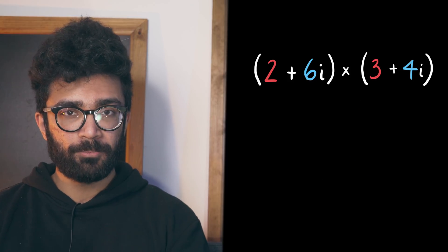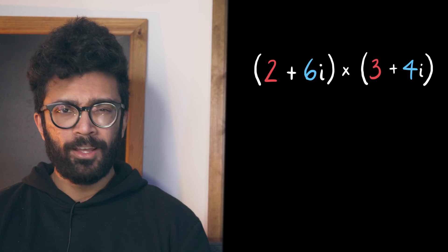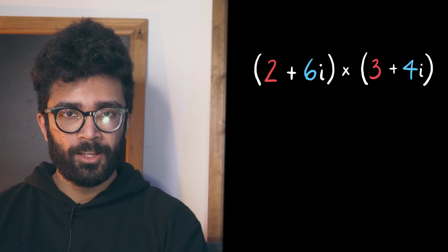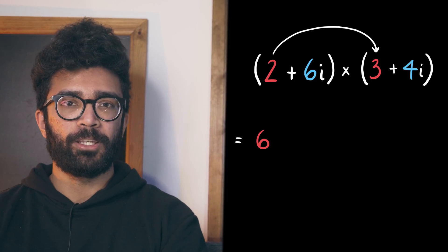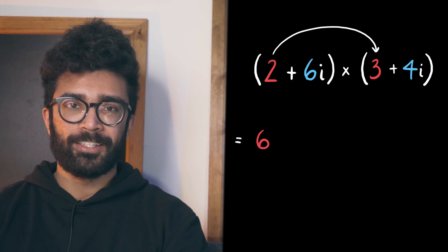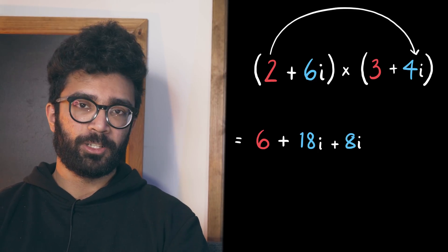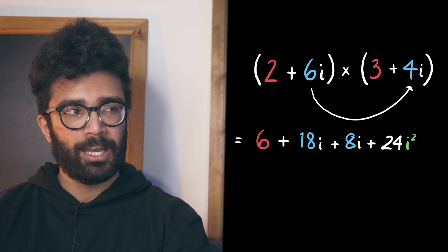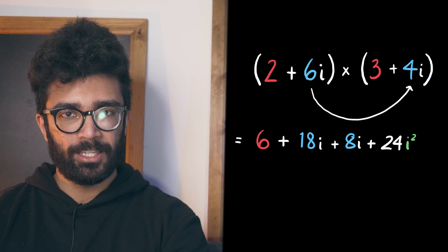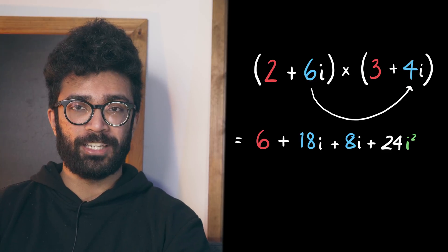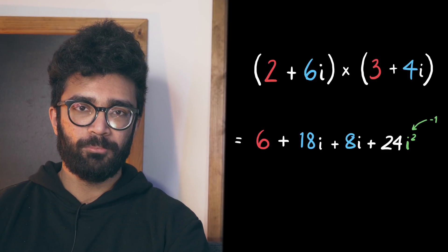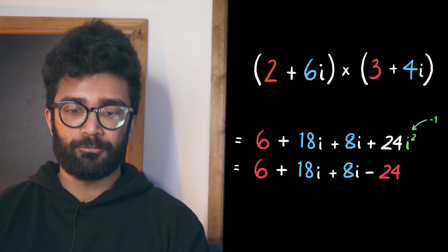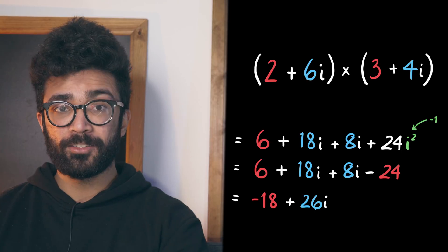And here's how we can multiply complex numbers together — this will be intuitive if we know how to multiply out brackets with multiple terms. Notice that the first term gives us a real number; the second and third terms are imaginary because we multiplied an imaginary number by a real one. The final term has an i-squared bit in it, but i-squared is just negative one, so this final term is also real. We can then simplify by collecting reals and imaginaries together.